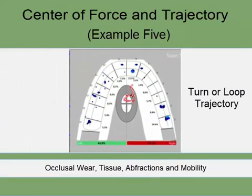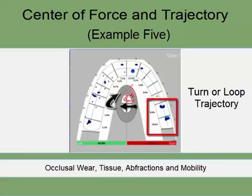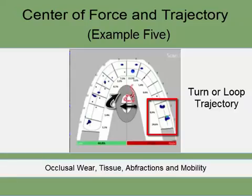In the last example, during a left excursive movement, the force initially moves horizontally but quickly loops around back towards the right posterior teeth. This results from a significantly forceful balancing interference present on tooth number two. Patients with this looping center of force trajectory are predisposed to hyperactive muscular TMD symptoms, tissue recession, infractions, and mobility.